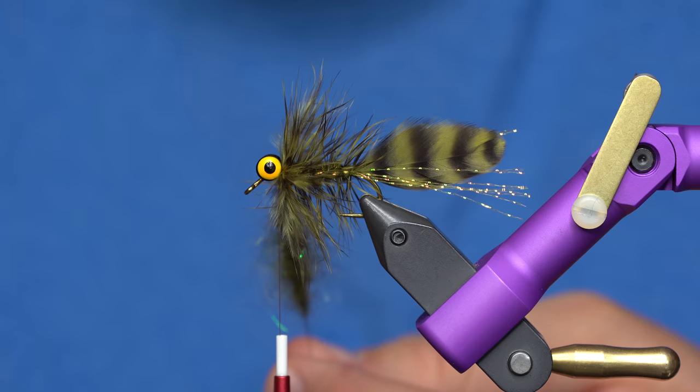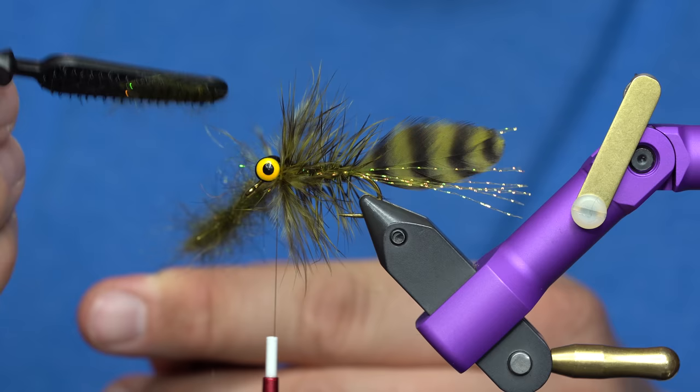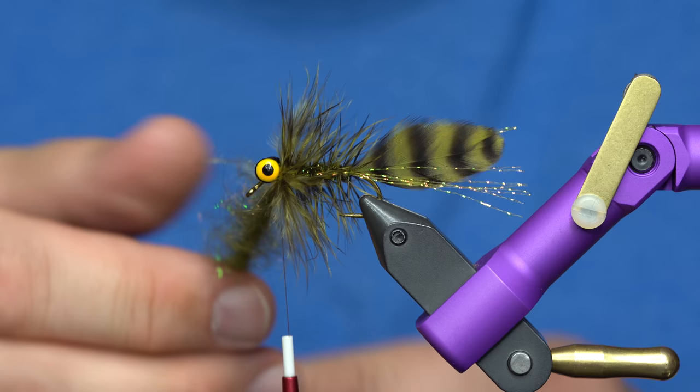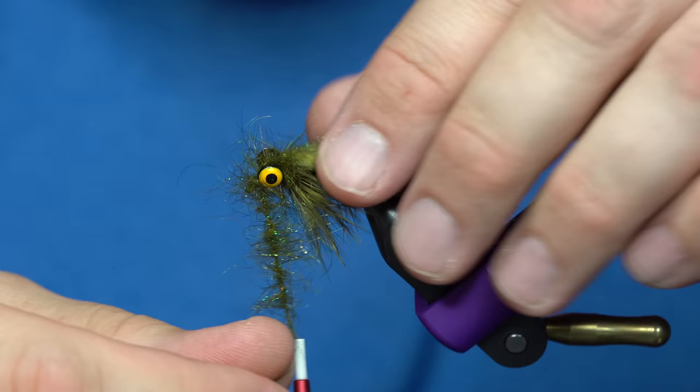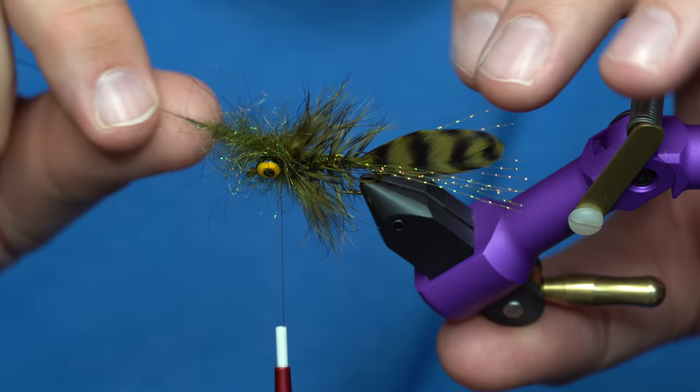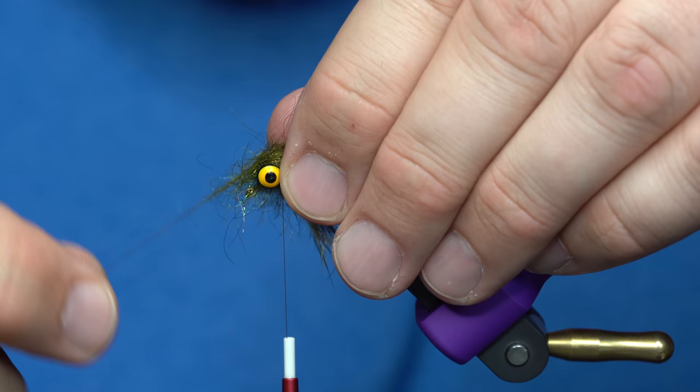Now once it's twisted up I'm going to lightly pick out some of those fibers before I wrap it and I'll do one to two full turns behind the barbell eyes. Then I'm going to cross over and under that eye and I'm going to do the same thing on the other side. Go around the eye and then I'm going to finish in front.